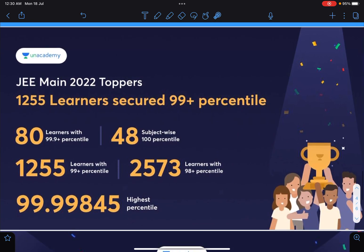This time Unacademy's results are too good. There are 1255 learners who have got 99 or above percentile and there are 80 students which are 99.9 plus percentile. There are 48 subject-wise 100 percentiles and 98 plus there are 2573 students. The highest is 99.99845.